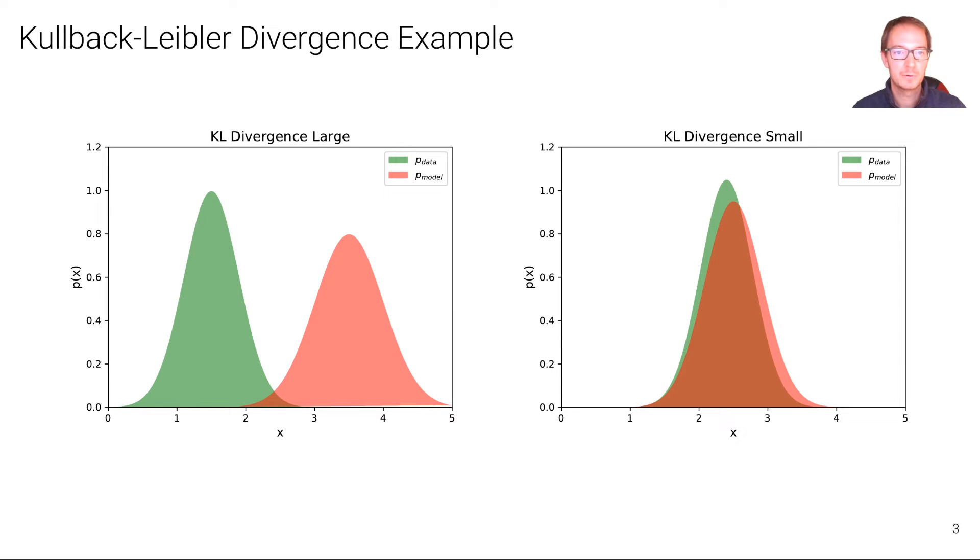Here's an example for two Gaussian distributions and measuring the KL divergence between them. What we can see here on the left is that these distributions don't overlap, they are quite dissimilar. And in this case, the KL divergence will be large. And contrary, here on the right, we have two distributions that overlap, in which case the KL divergence will be small.